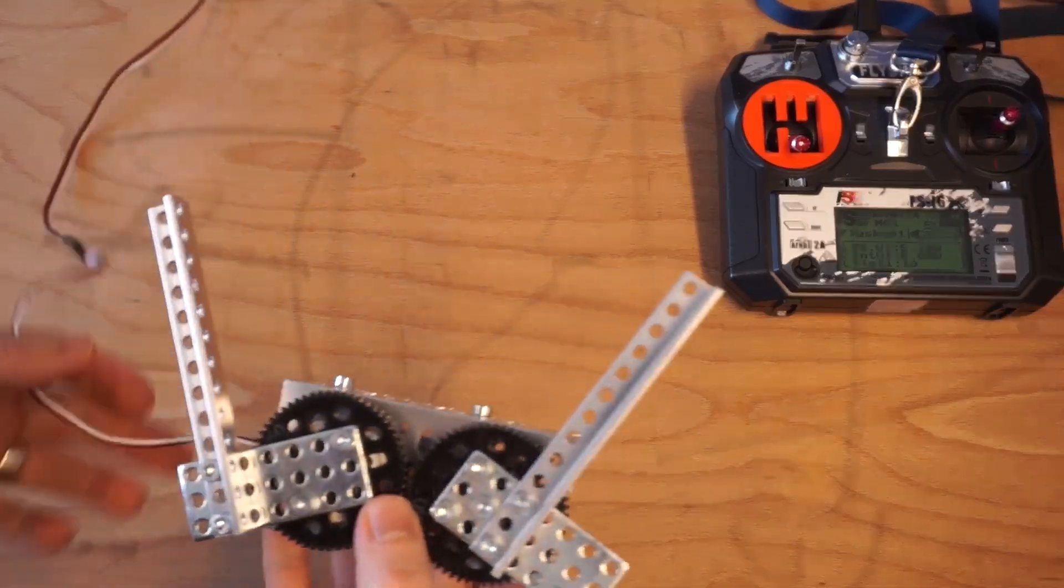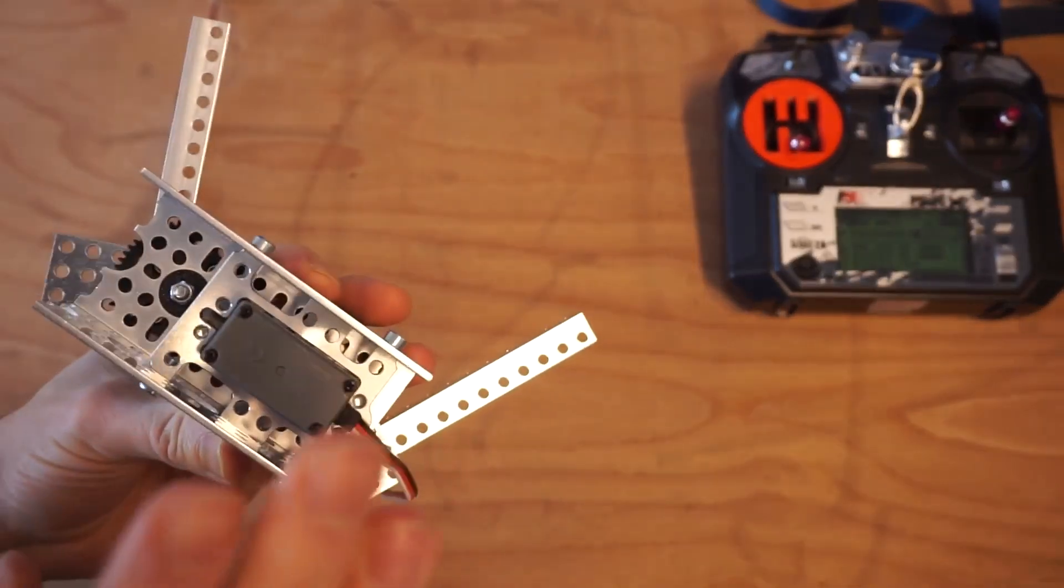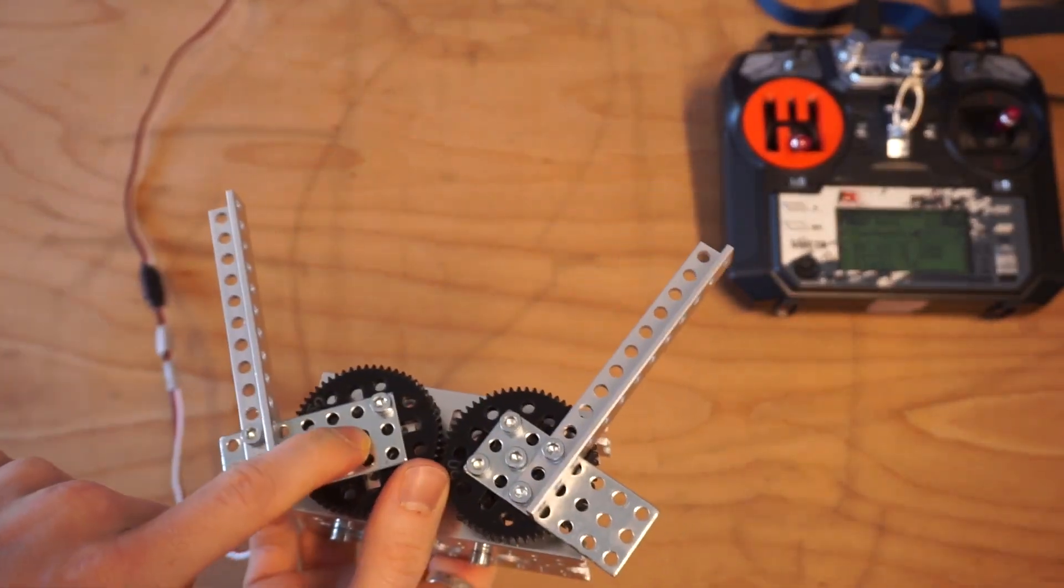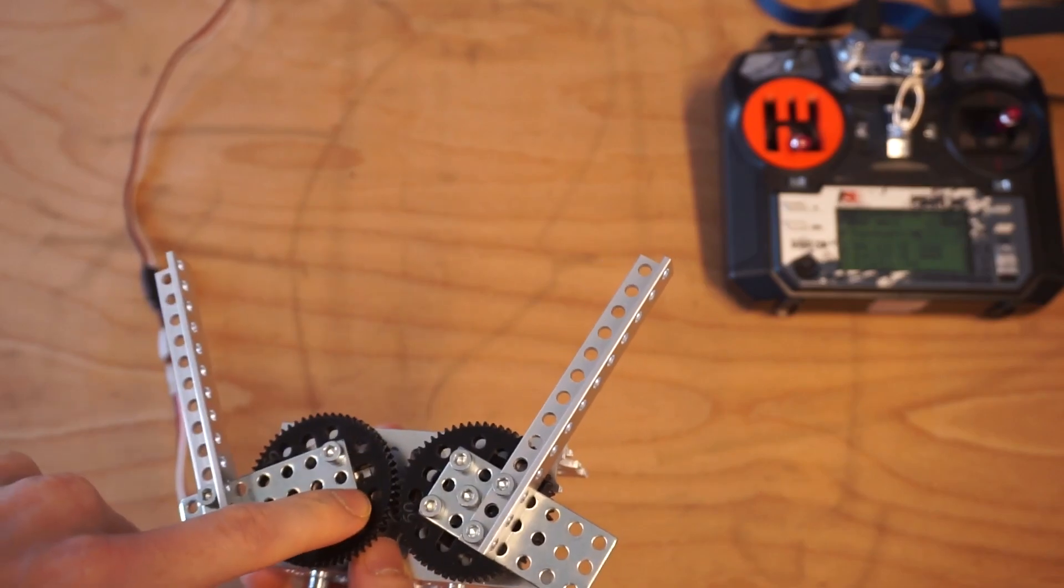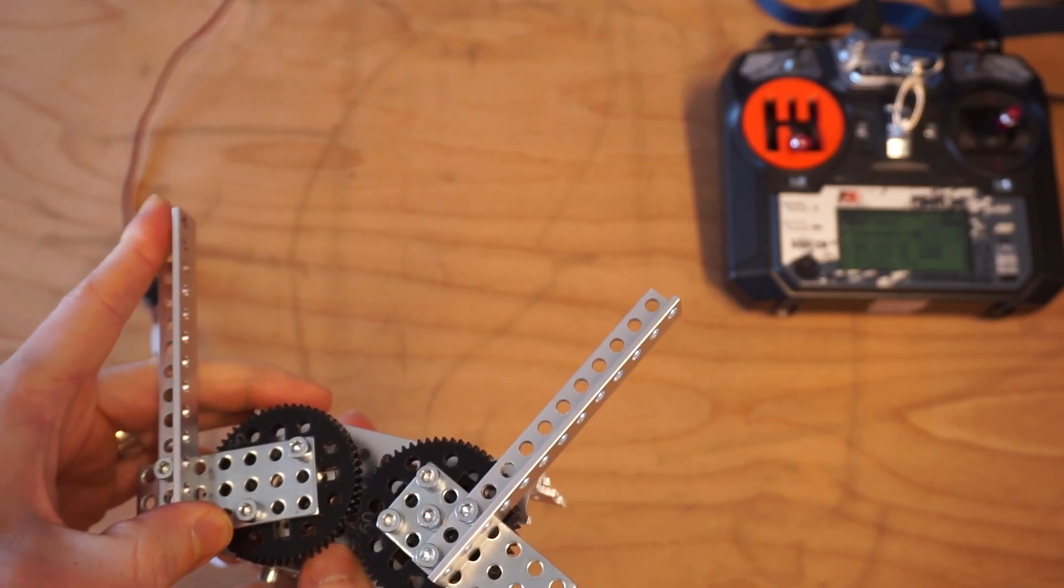Take a look at this design. All it is, it's a simple single servo motor driving one side of the claw. You have two gears meshing together so that when the servo moves it pushes one gear.